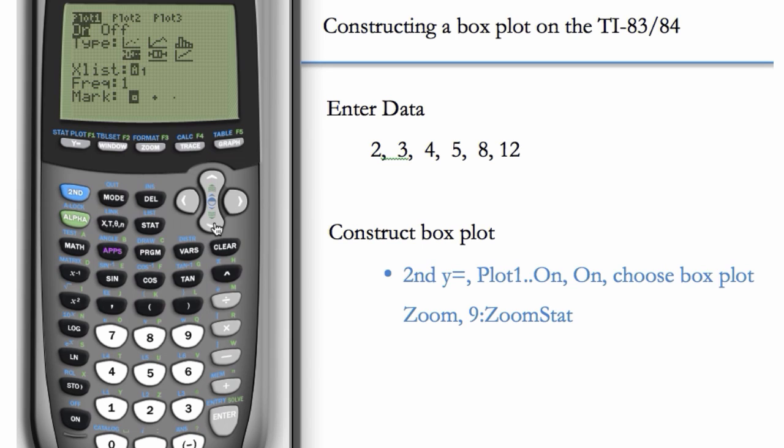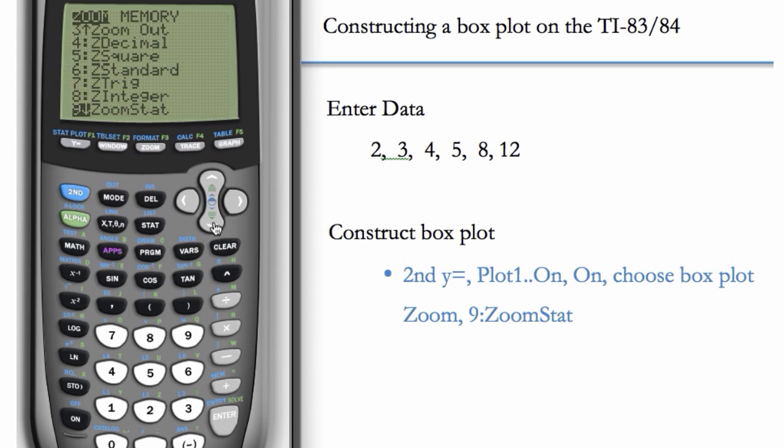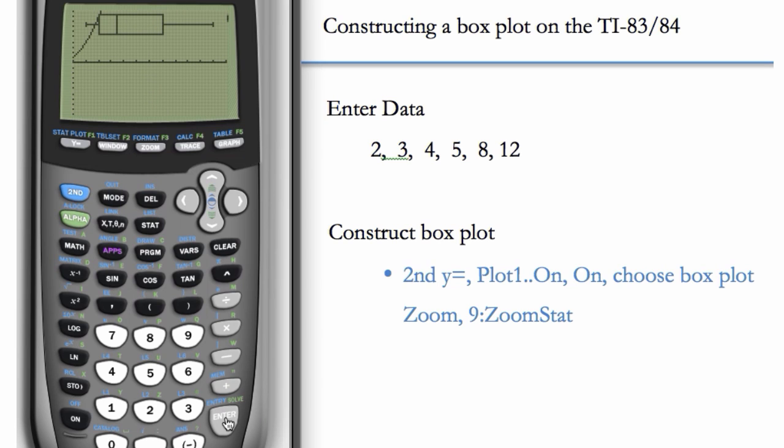Now we can hit the down arrow. Our data is in L1, so that's fine. Frequency is always 1, and the mark you can just leave it, it's not that important. Now to get a good window, we're going to go to zoom along the top. And if we go down, we'll see that number 9 is zoom stat. For our stat graph here, that'll give us a nice window. So we'll hit enter or 9. And there's our box plot.